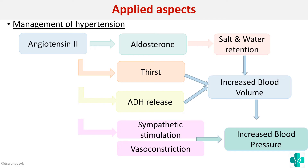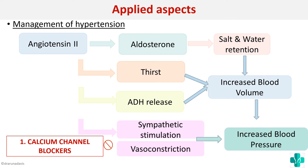Next, some applied aspects: if regulation of BP is not proper it can lead to hypertension, and management of hypertension is also an important exam question. The first mechanism to reduce BP in hypertensive patients is to decrease vasoconstriction — you can give calcium channel blockers so that smooth muscle constriction is decreased.